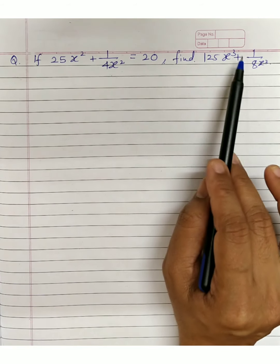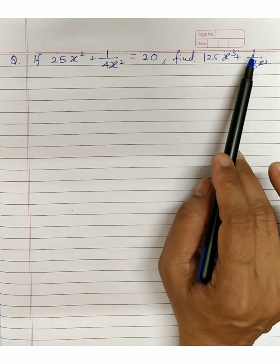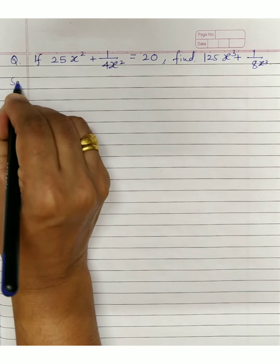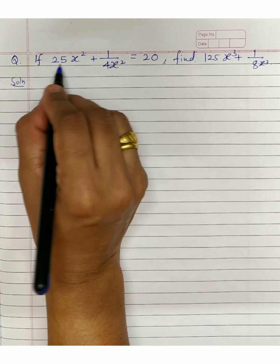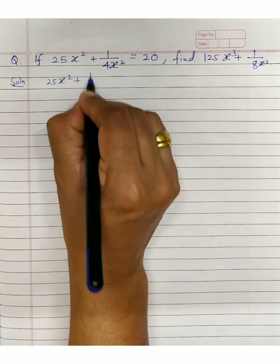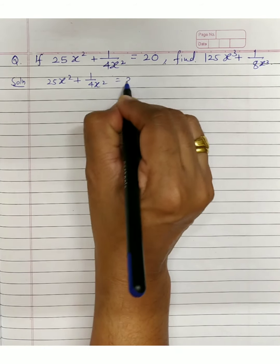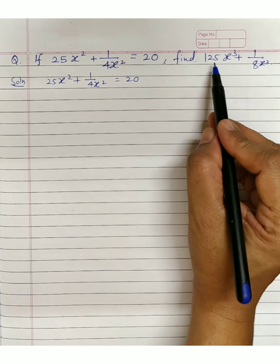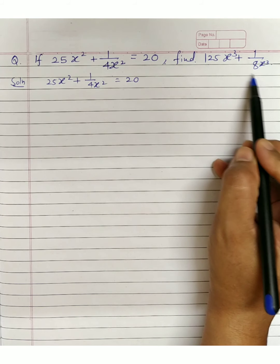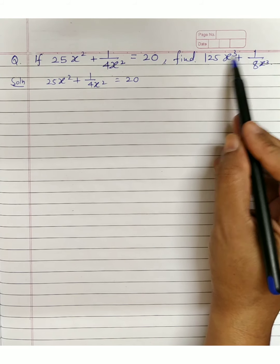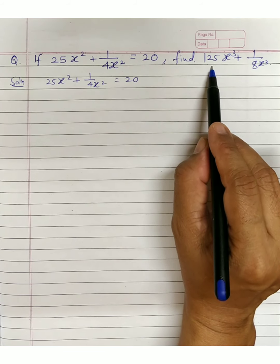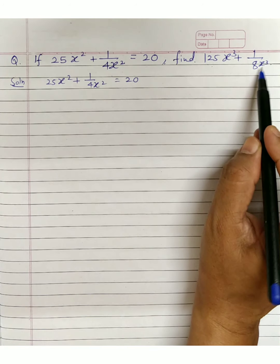From square terms, we cannot directly go to the cubic part. You need to find the simplest form first. Just as x³ + 1/x³ can be found if x + 1/x is known, here you need to find the value of 5x + 1/(2x).